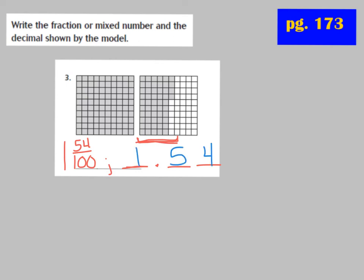Let's check our decimal form. In the ones place we have 1 whole shaded, and we have 54 hundredths after the decimal point. My 54 comes after the decimal point, with 5 in the tenths place and 4 in the hundredths place: 1.54. If I were to read it, I would say 1 and 54 hundredths.